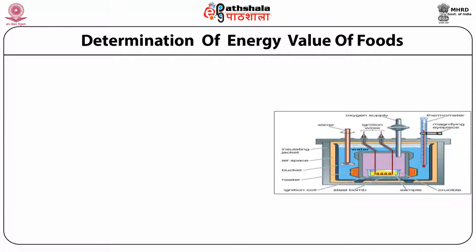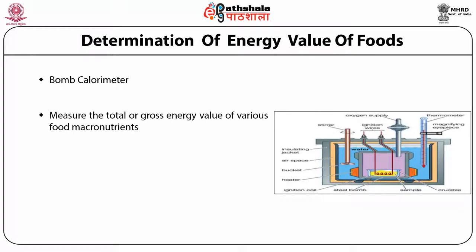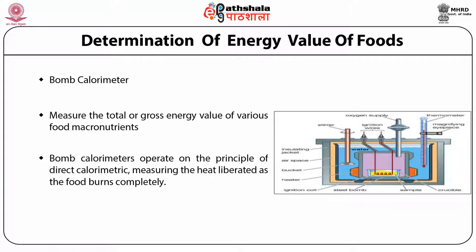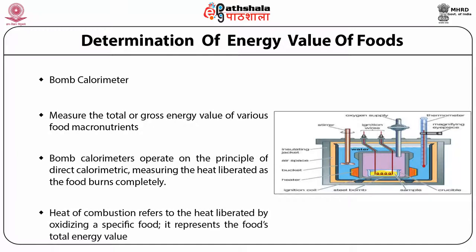Determination of energy value of foods is done by bomb calorimeter. It measures the total or gross energy value of various food macronutrients. Bomb calorimeters operate on the principle of direct calorimetry, measuring the heat liberated as the food burns completely. Heat of combustion refers to the heat liberated by oxidizing a specific food, representing the food's total energy value.